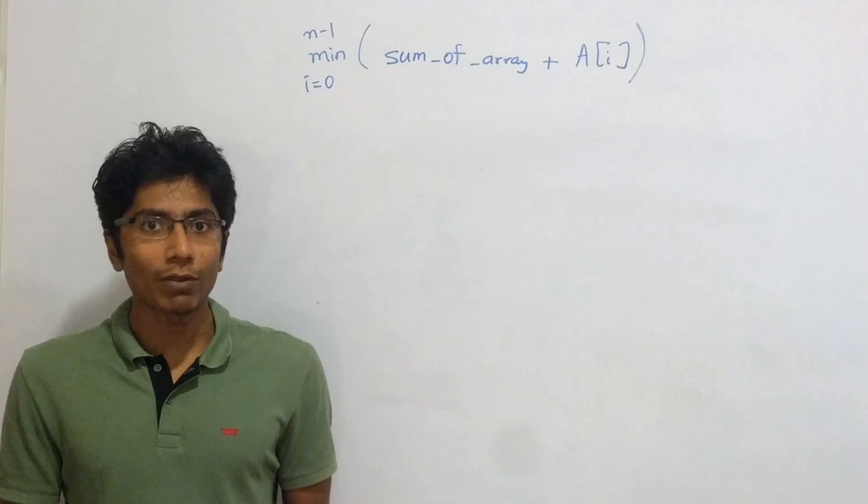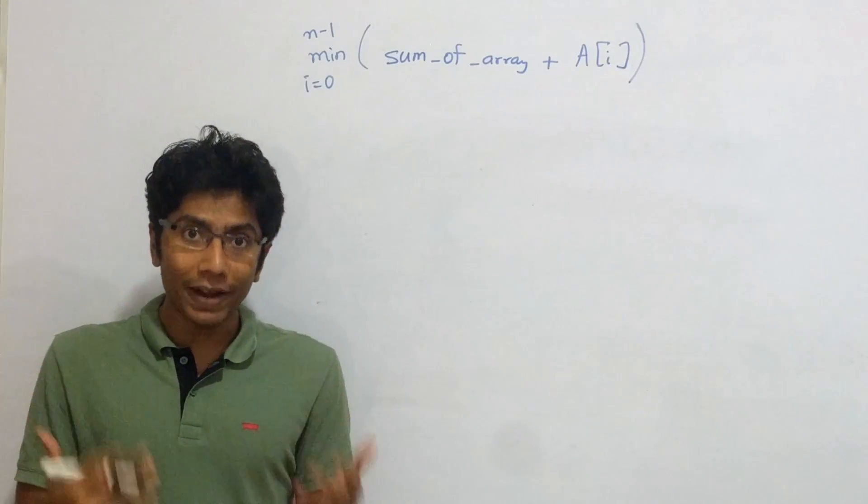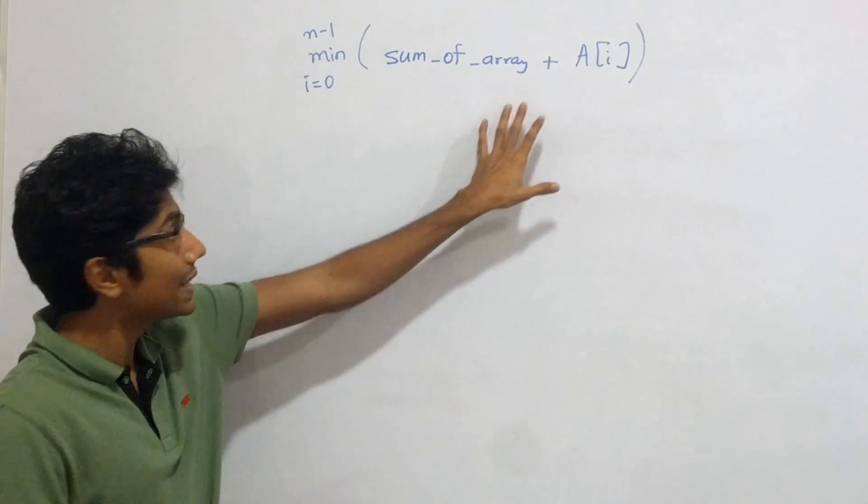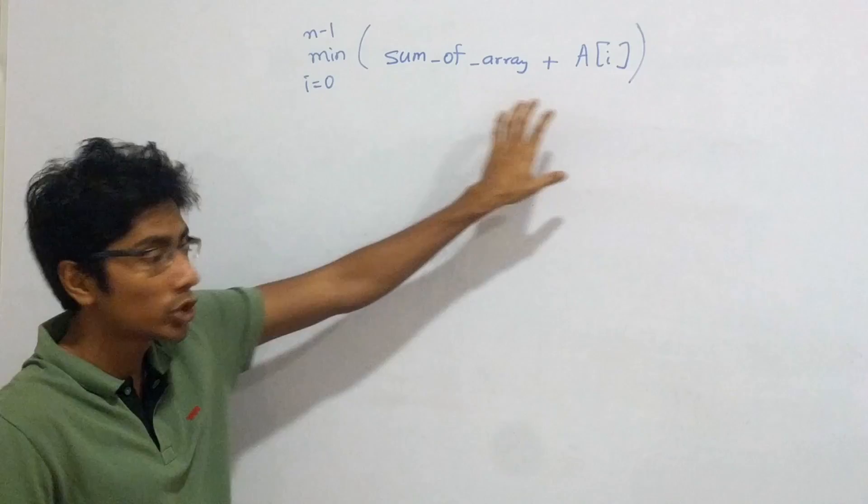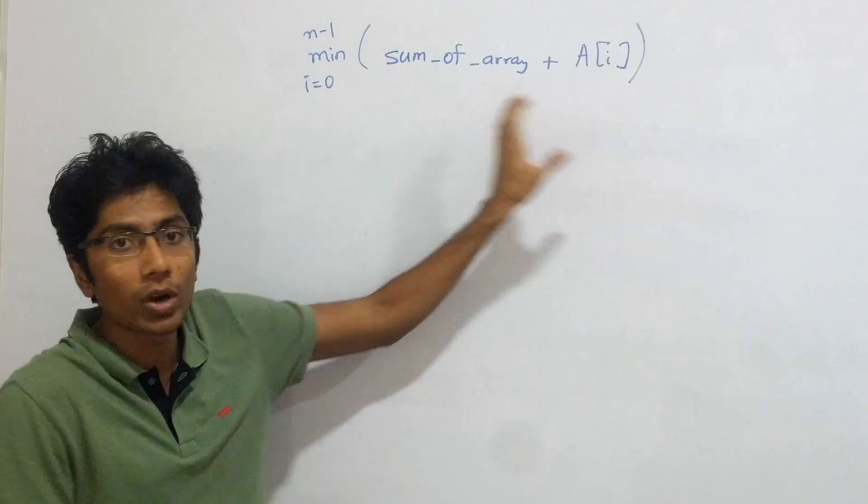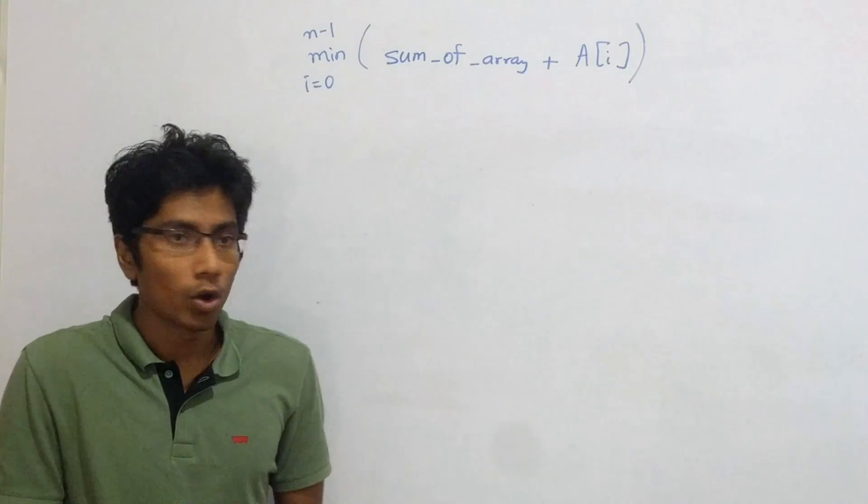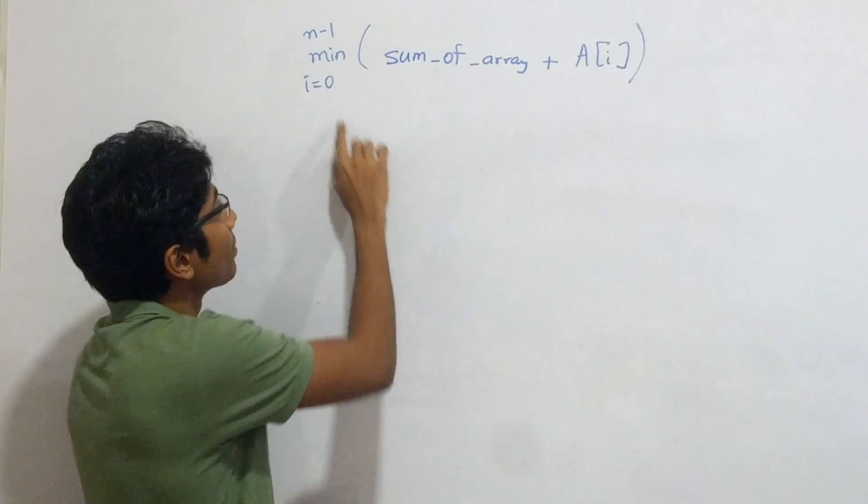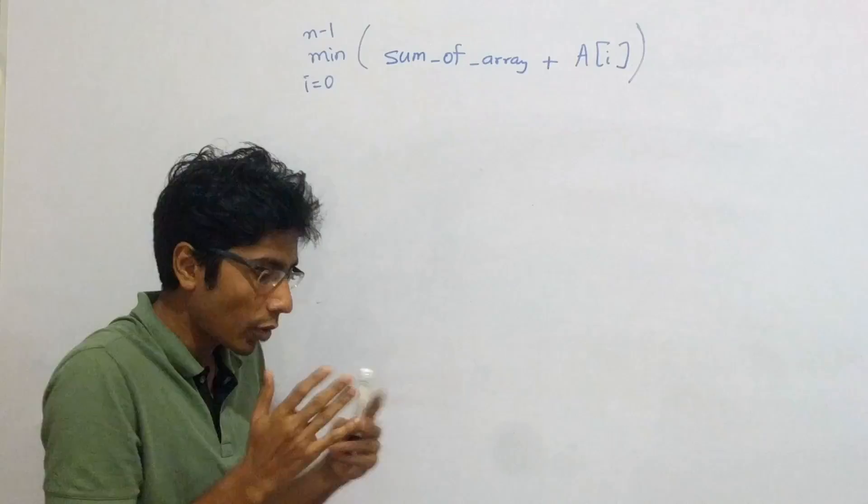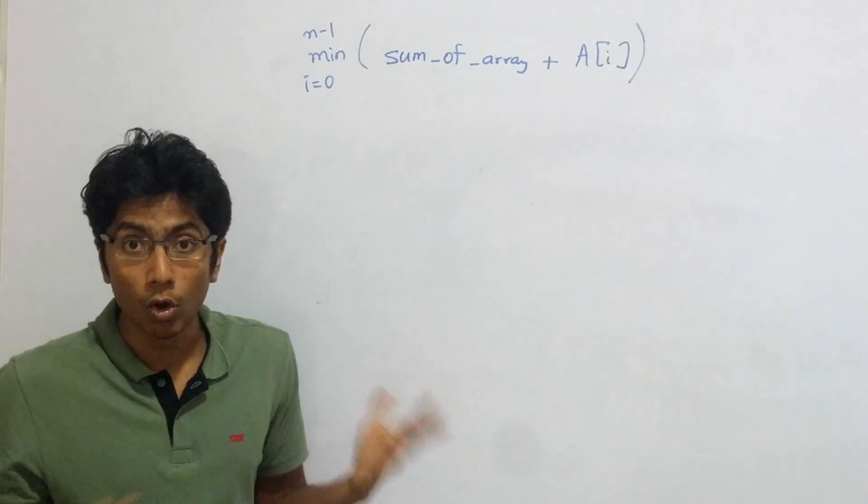Now let's try to understand what is the aim of the question. The aim of the question is to find a test case where this code block fails. So the minimum which should have been is not the minimum which is being printed. So this is what the code block does. It finds out the sum of the array plus A[i] and finds the minimum of those. The problem we have discussed already is that there might be overflows.